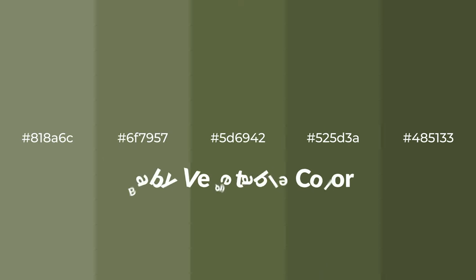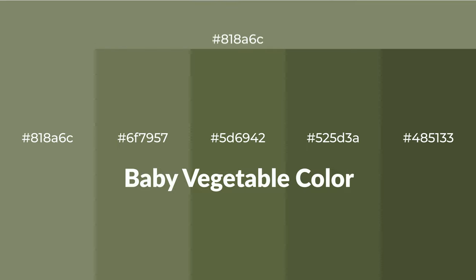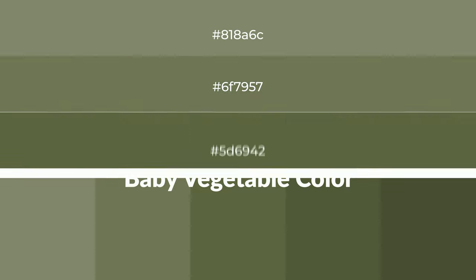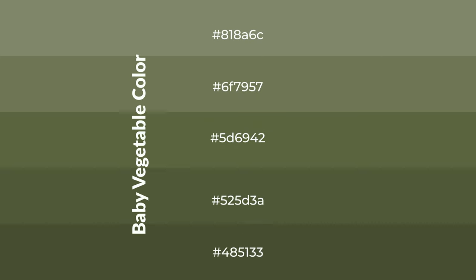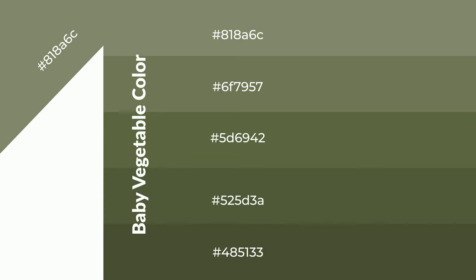Warm shades of baby vegetable color with a green hue for your next project. To generate tints of a color, we add white to the color. Tints create light and exquisite emotions. To generate shades of a color, we add black to the color, and it is used in patterns, 3D effects, and layers. Shades create depth and drama.